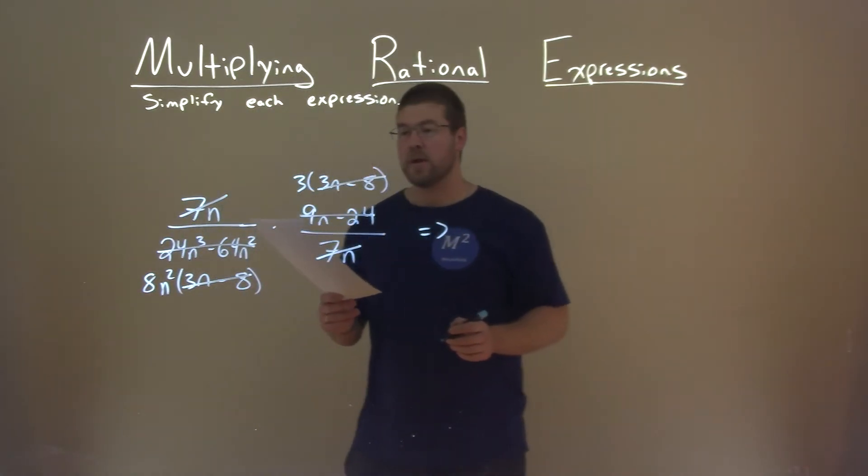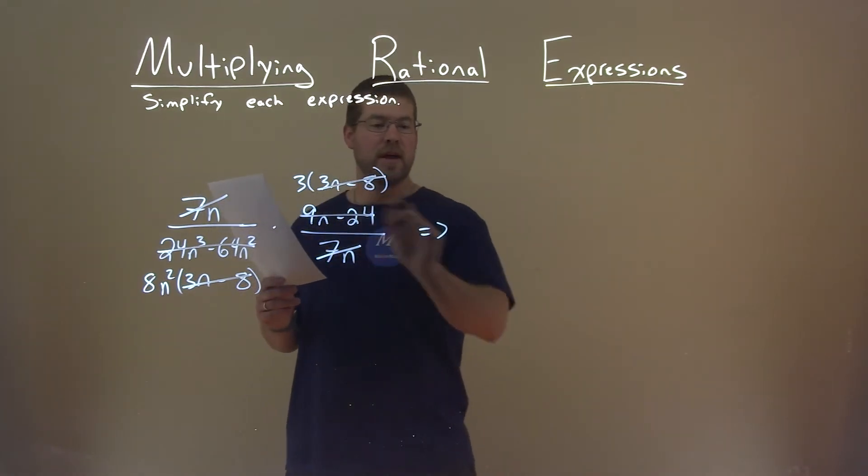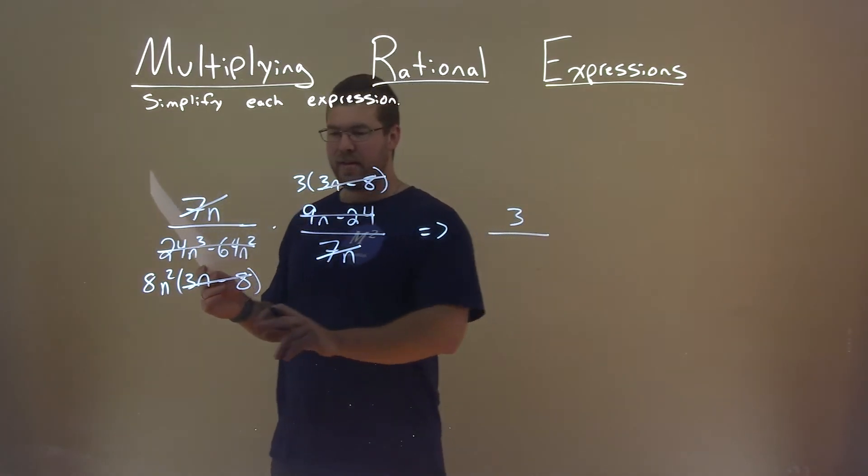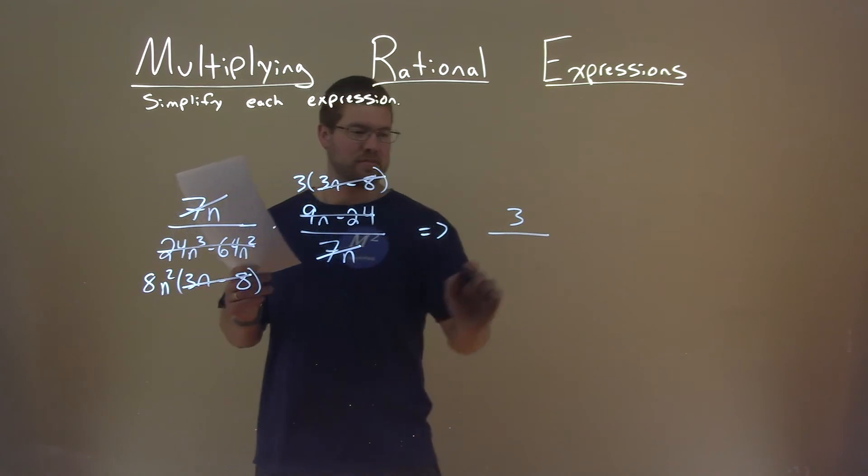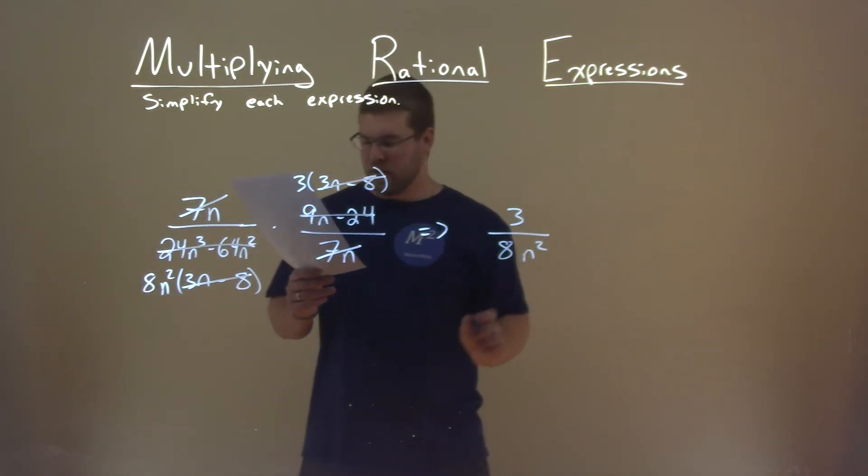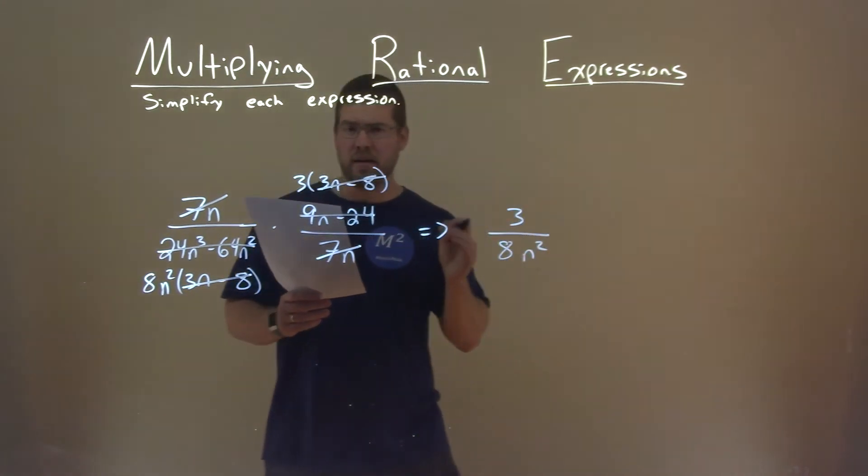So now we have to multiply across here. 3 is what's left in the numerator, and the denominator is actually left to just 8n squared. And so our final answer is 3 divided by 8n squared.